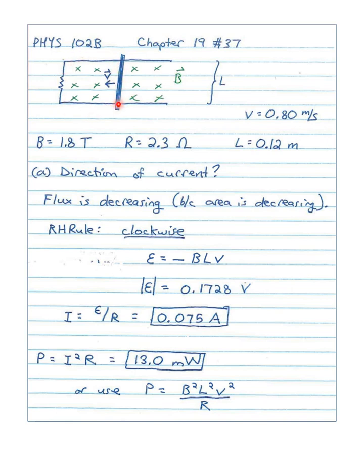Now, the electromotive force, there was an equation that was derived in class and in the textbook, but the electromotive force, we're going to ignore the negative sign here. It becomes the magnetic field times L times the speed, and we get 0.1728 volts as the magnitude. So, then the current is that 0.1728 volts divided by the resistance of 2.3 ohms, and we get 0.075 amperes.